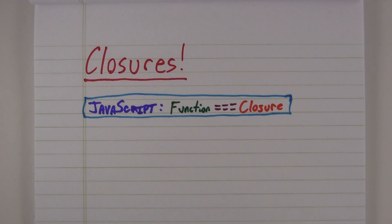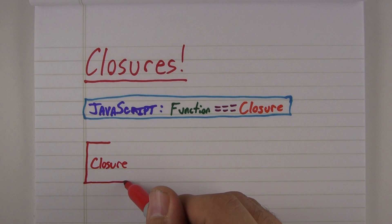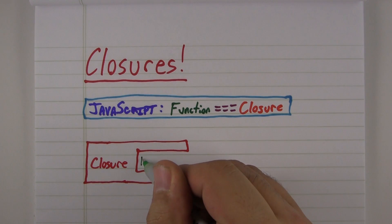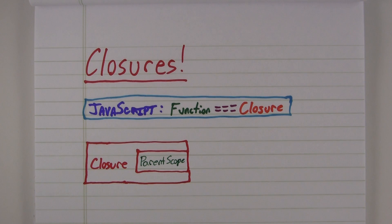But what are closures? To put it simply, a closure closes around the scope of its parents. That means that the closure scope automatically contains everything from its parent.